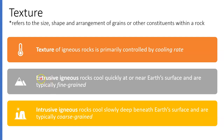Extrusive igneous rocks, which are the ones that come out of volcanoes, form on the surface of the earth and are usually fine-grained — they have very small crystals that you cannot see with the naked eye. Intrusive igneous rocks cool below the surface and usually form coarse-grained igneous rocks, so these are going to have very large crystals in them.